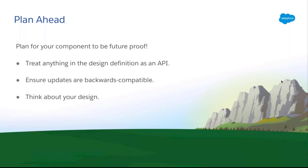With all the power comes a bit of responsibility. You've got to plan your component to be future-proof. Once you expose your component and certain design properties, you have to remember that these are effectively an API for your customers — treat them like that, ensure all your updates are backwards compatible, and that nothing is broken with changes you're making. Before you build and ship your component, really think about your design: what values would really make sense for your customer, what do you really want to expose in your design file — that's very important for your component to be backwards compatible.